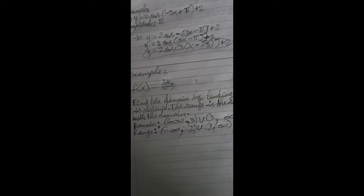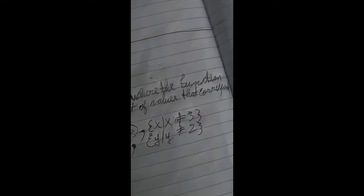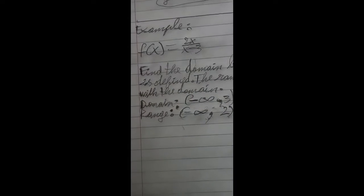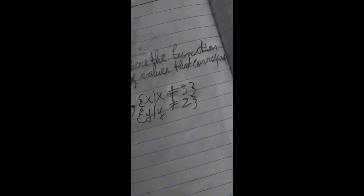Alright, as you can see, this is the domain and range. Find the domain by finding where the function is defined. The range is the set of values that correspond with the domain. The domain is negative infinity to 3, and 3 to infinity. For the range, as you can see, it's negative infinity to 2, and 2 to infinity.